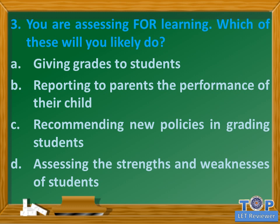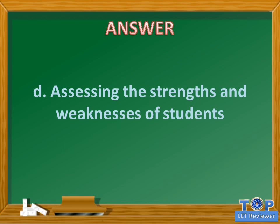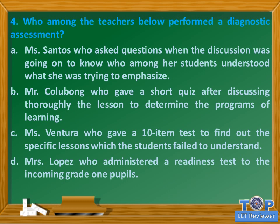Question number three: You are assessing for learning. Which of these will you likely do? A. Giving grades to students, B. Reporting to parents the performance of their child, C. Recommending new policies in grading students, D. Assessing the strengths and weaknesses of students. Answer: D. Assessing the strengths and weaknesses of students.